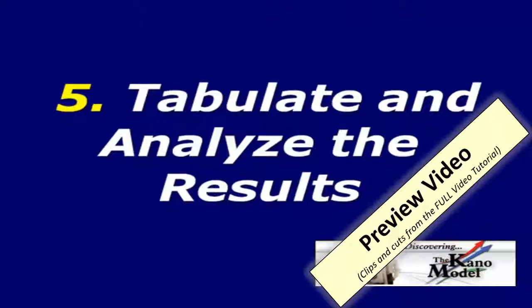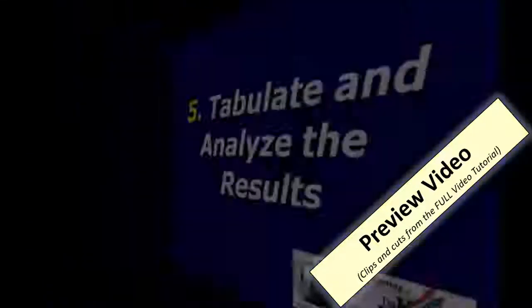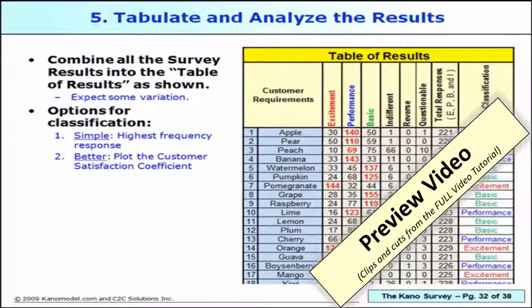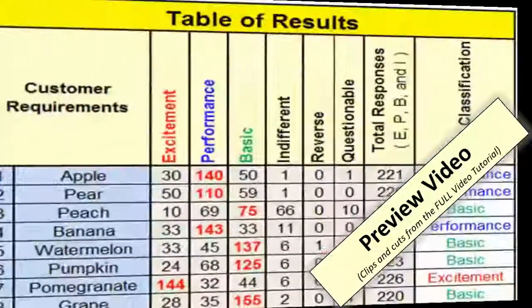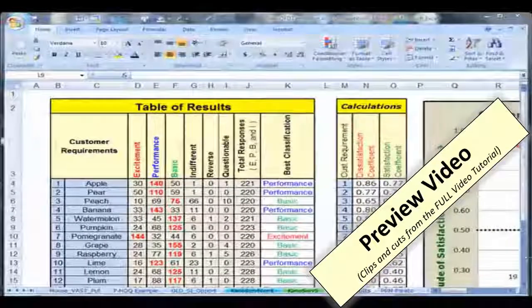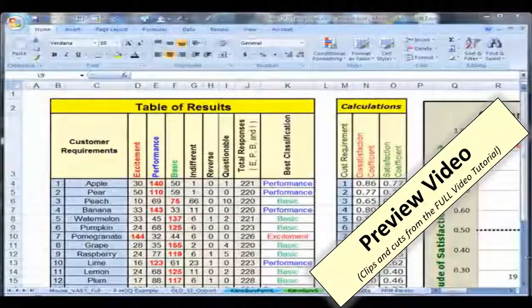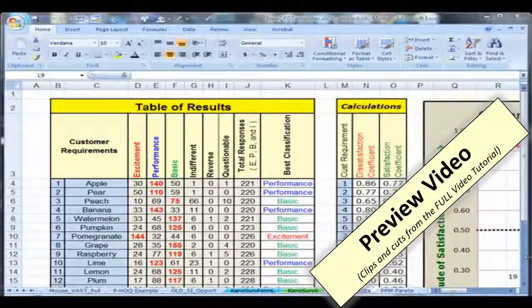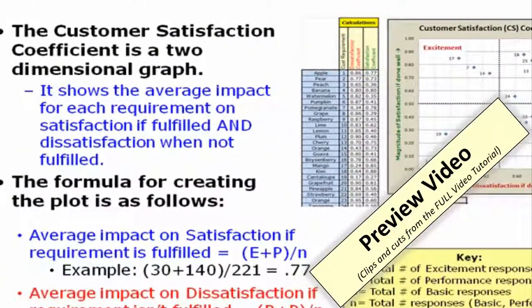Step five is to tabulate and analyze the results. After decoding the classification of all the needs and attributes for each respondent, the combined results should be compiled. Better than that is to create a customer satisfaction coefficient chart, which gives you a higher resolution analysis of the results. For example, 30 excitement plus 140 performance divided by 221 total responses gives you the average.